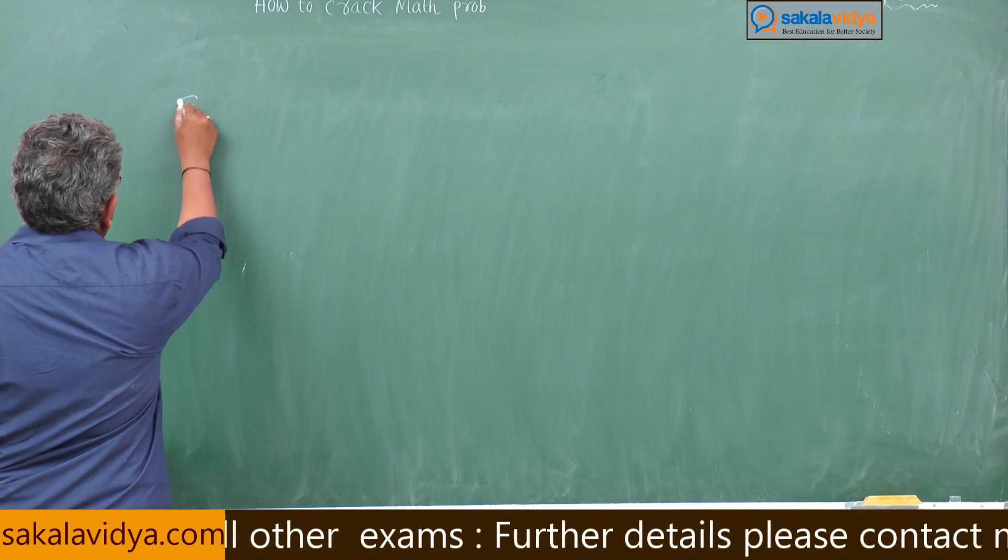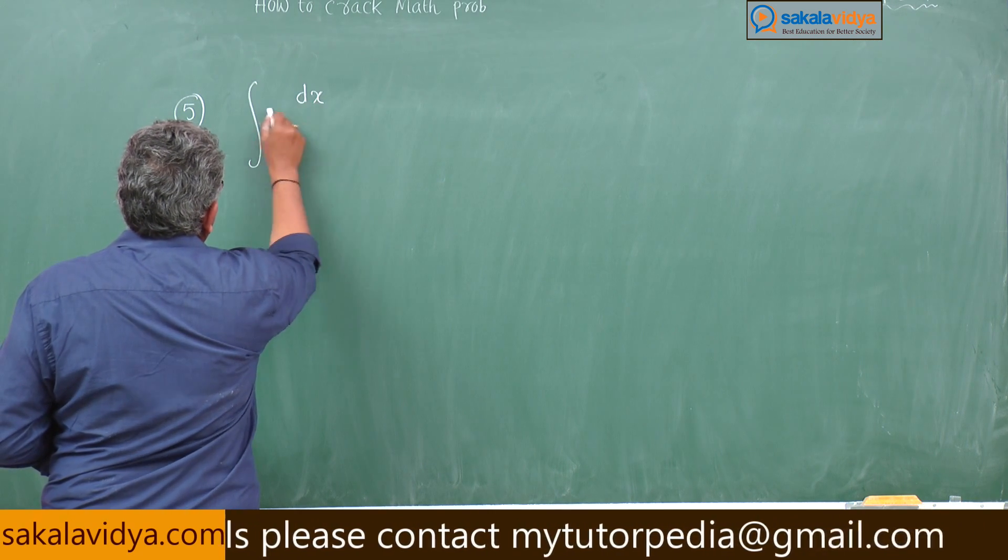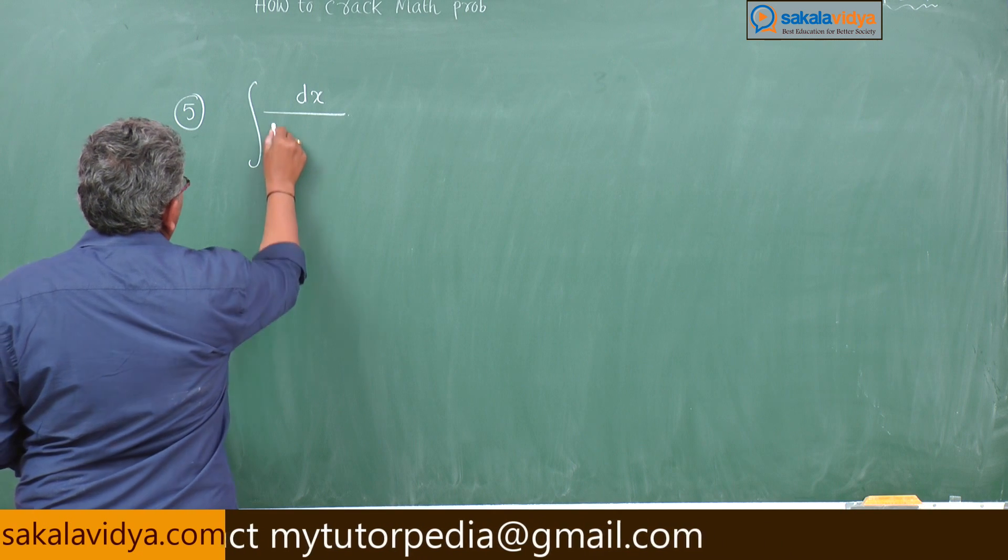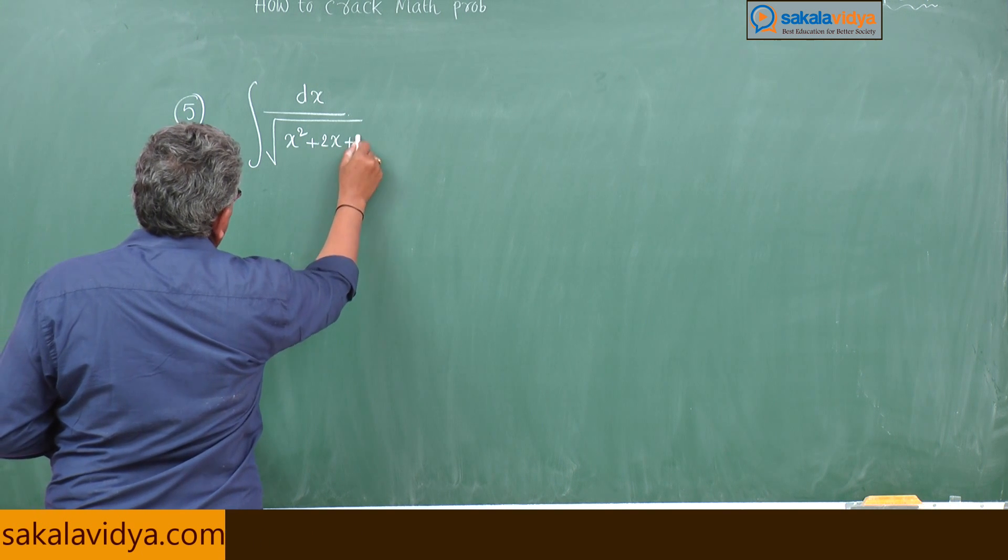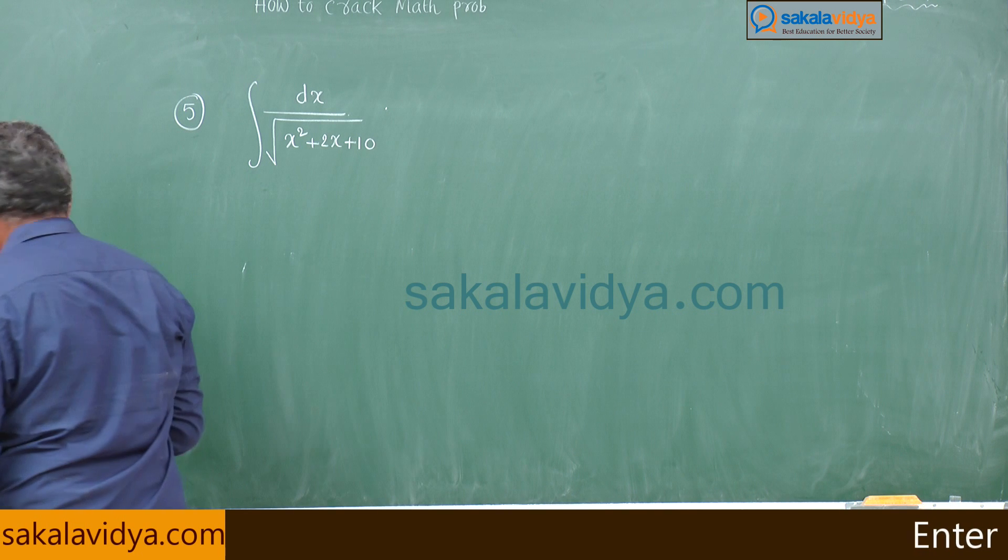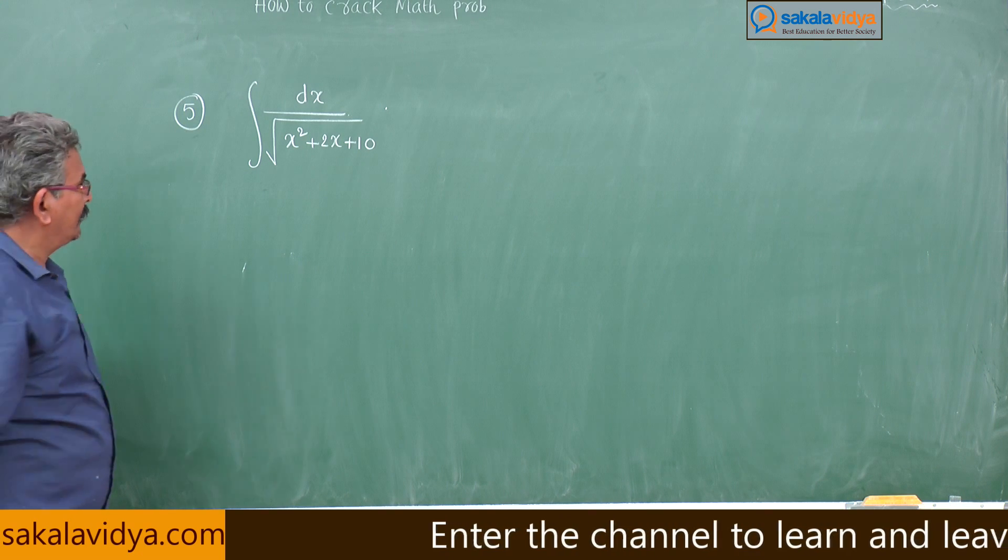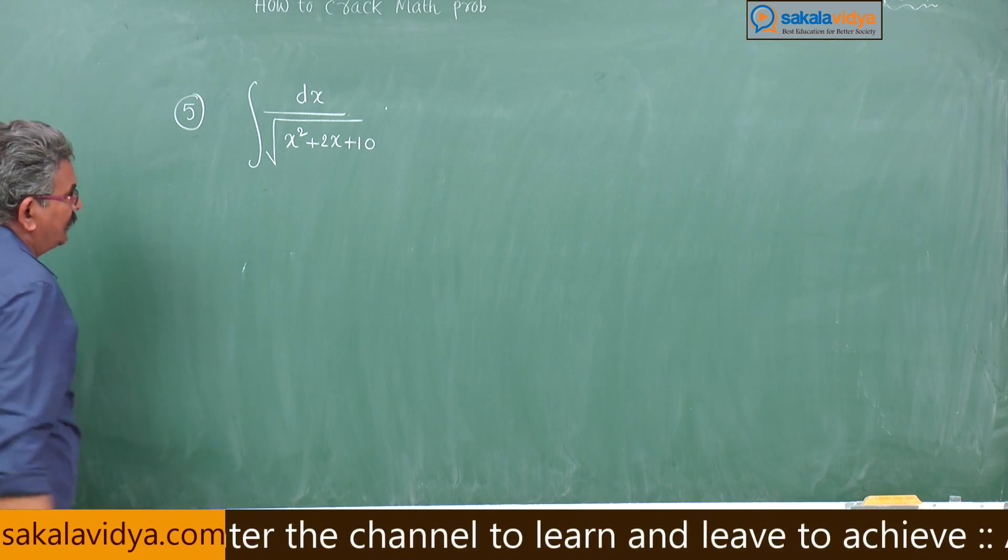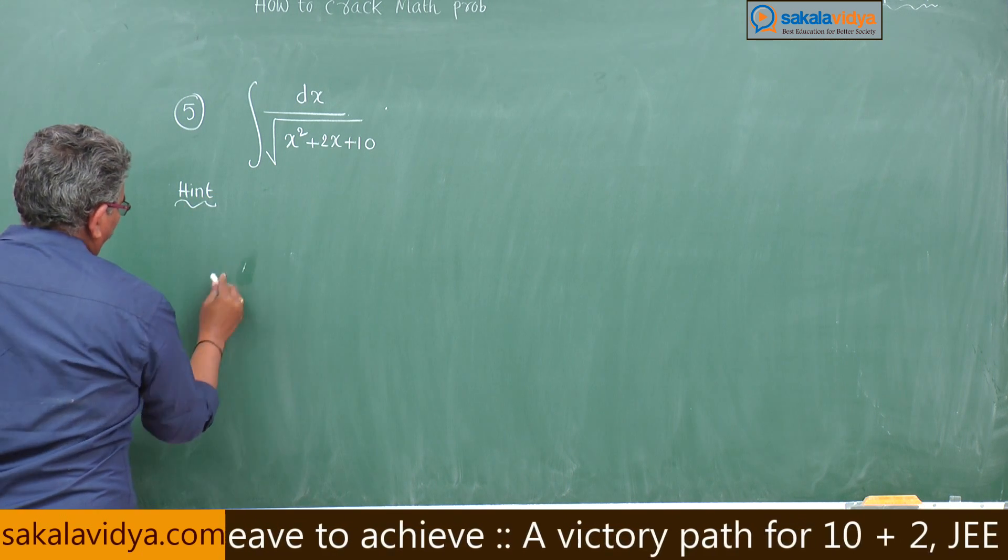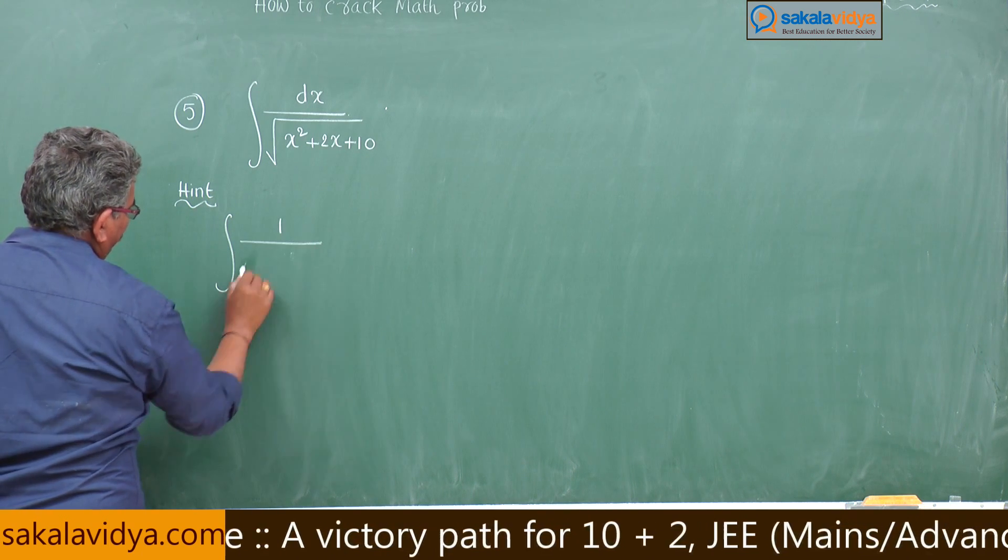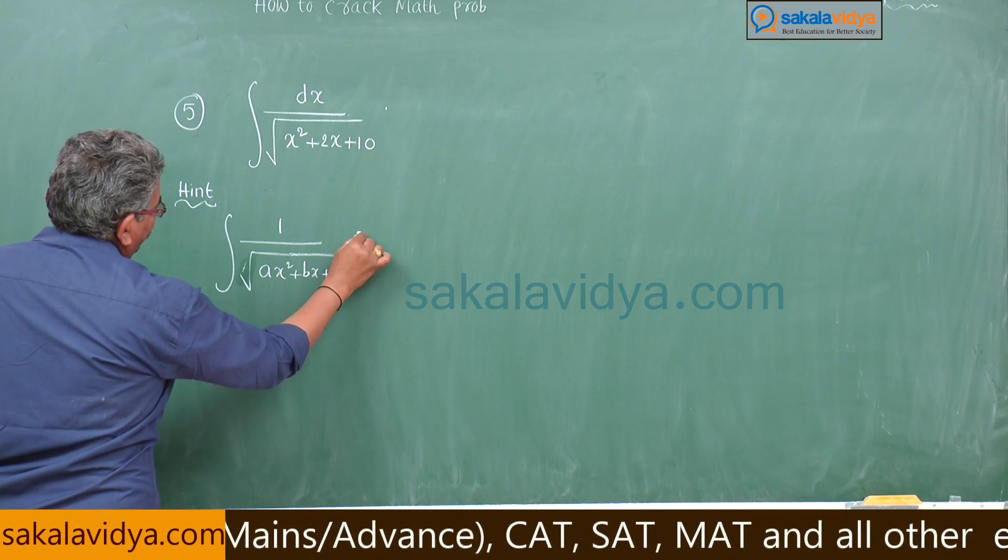Fifth problem: integral dx by root of x square plus 2x plus 10, dx by root of ax square plus bx plus c dx.